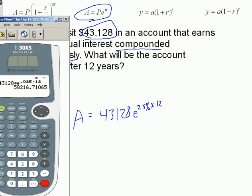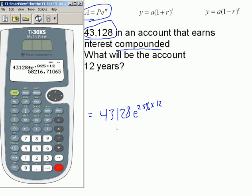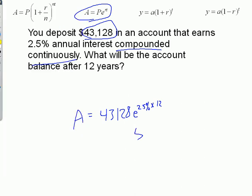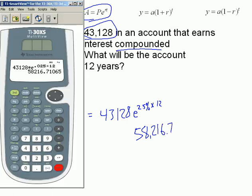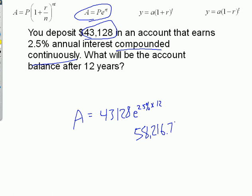It tells me—the question was that much money I started with, $43,000—$58,216. That's how much money I'm going to have if it's compounded continuously after 12 years. Have fun with this stuff and do good on that test.